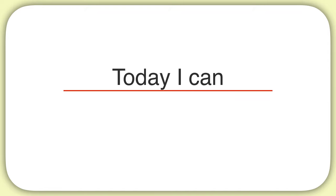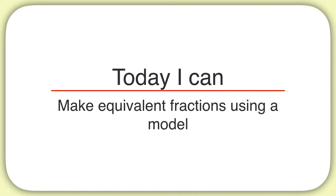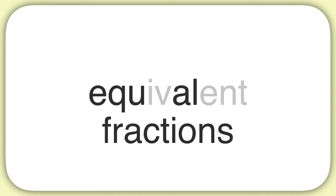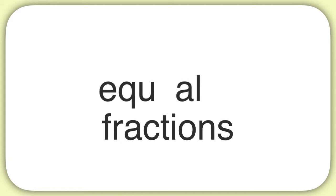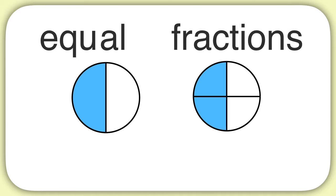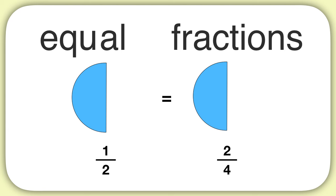Today we are learning how to make equivalent fractions by using a model. When you see the word equivalent, you can see that inside of it is the word equal. So when you hear the phrase equivalent fractions, you should think to yourself: these are equal fractions. Let's look at an example. These two fractions are equal to each other, even though the first one is one-half and the other is two-fourths. They're the same because in both circles the same amount is shaded.